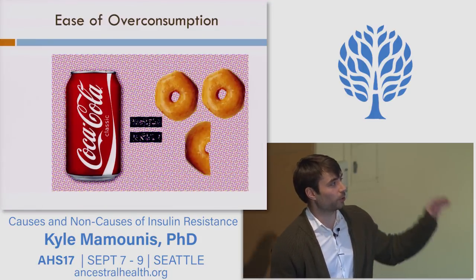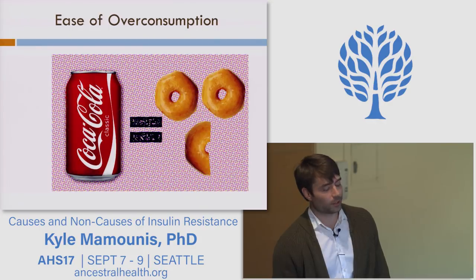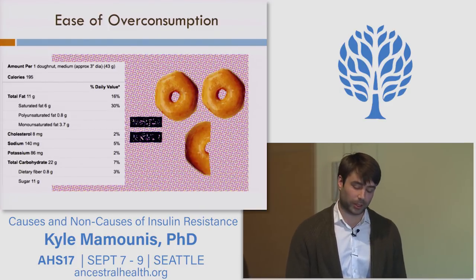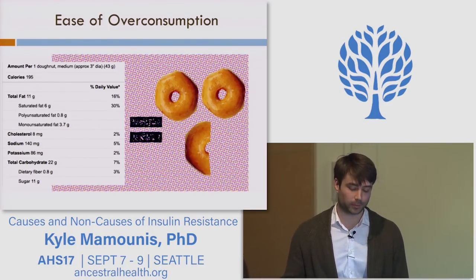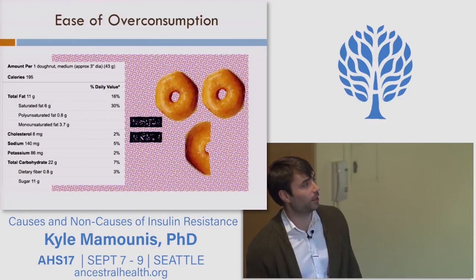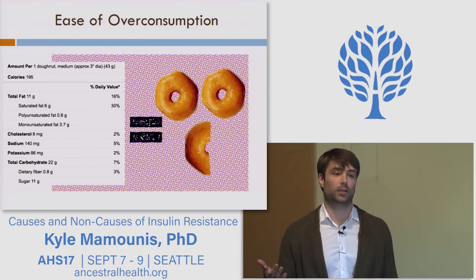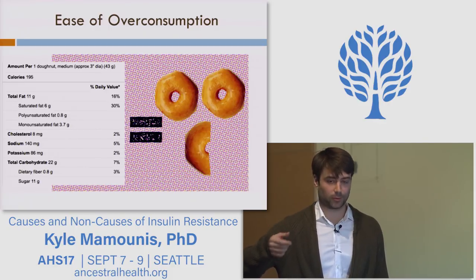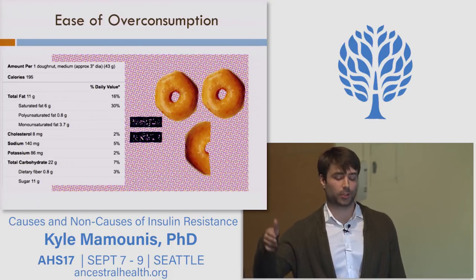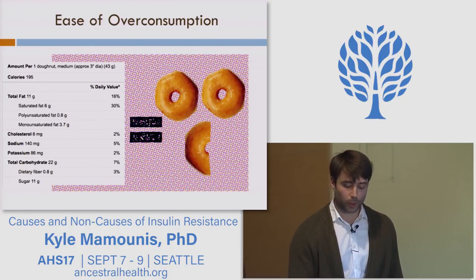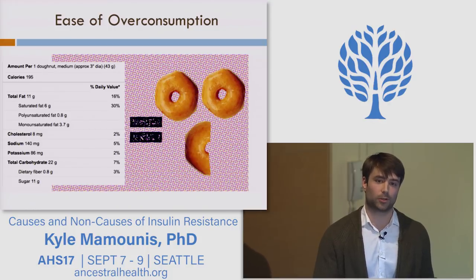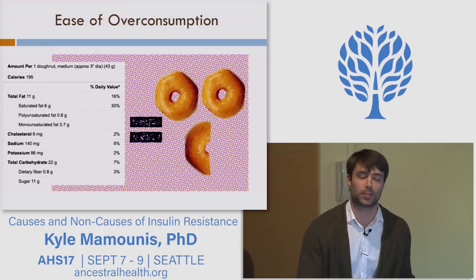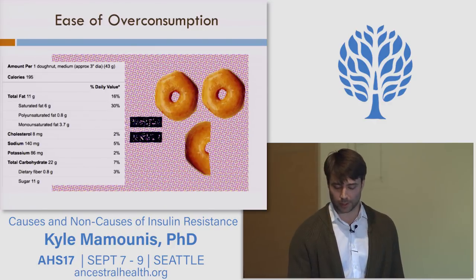Remember Coca-Cola has as much sugar as two and a half donuts — but what is actually in those donuts? A Wikipedia average donut has 11 grams of sugar, which is half the carbohydrate, but also 11 grams of fat. Since fat has more than twice the kilocalories per gram, you end up with more of the calories from fat than from sugar. Outside of straight-up candy and sugary beverages, it's just as easy to overconsume fat in junk food.